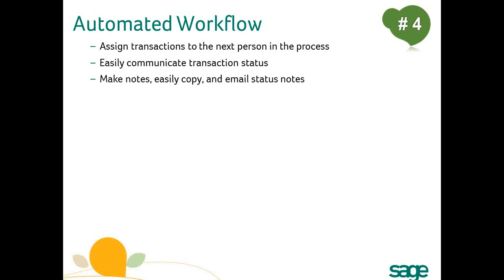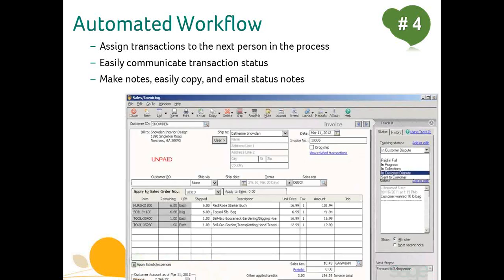So our fourth great reason is our automated workflow feature. Let's say to ship an order, you currently have to print the order, sometimes handwrite a specific instruction, and then physically run it down to the warehouse. Think of how much time that takes, and then multiply that by 20 orders each day. That's a lot of time. That's how much time can be saved by having those orders simply appear automatically in a warehouse employee's inbox.